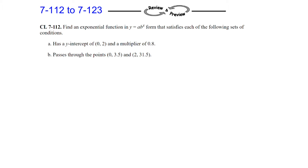Hello, this is Mr. Best. Welcome to Chapter 7 Closure Questions 112 through 123. Question 112: Find an exponential function in the form y equals a times b raised to the x that satisfies each of the following sets of conditions.